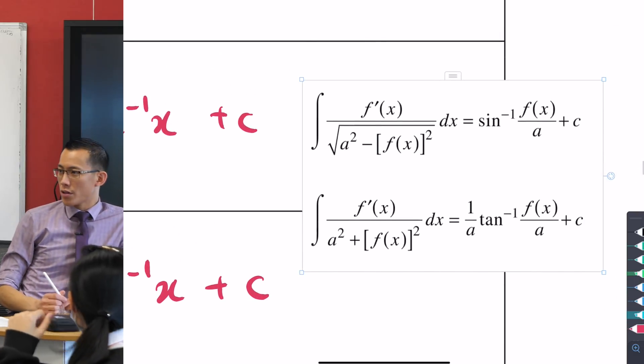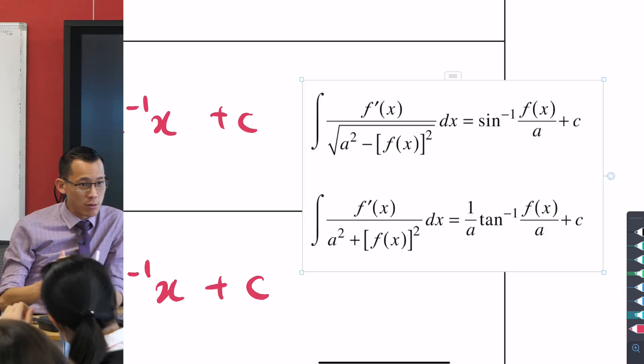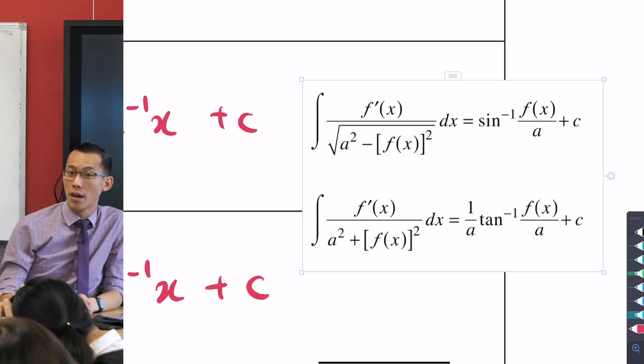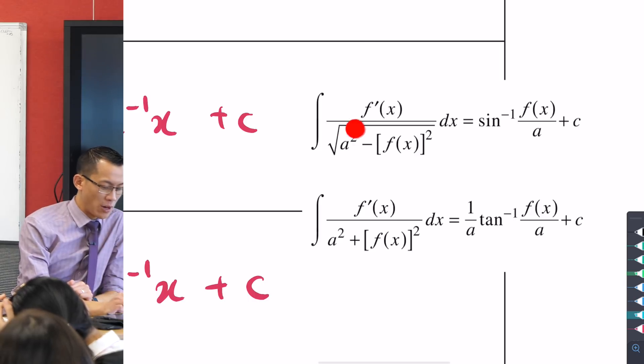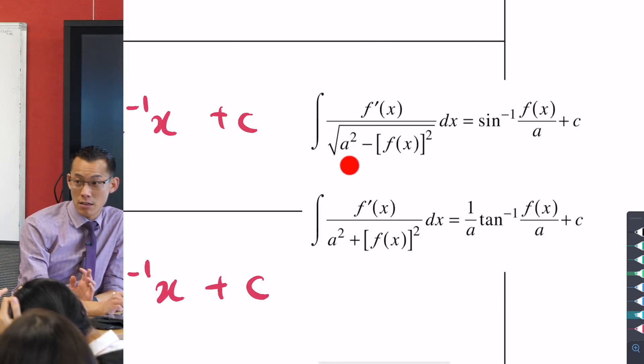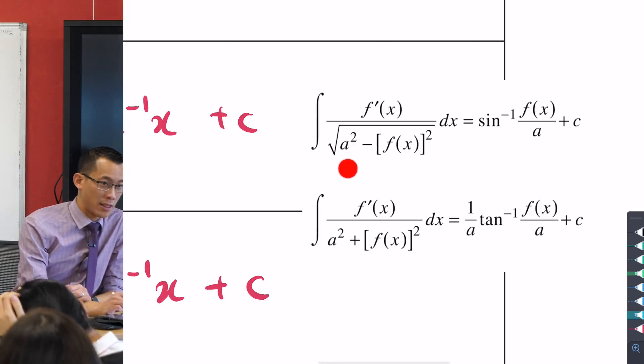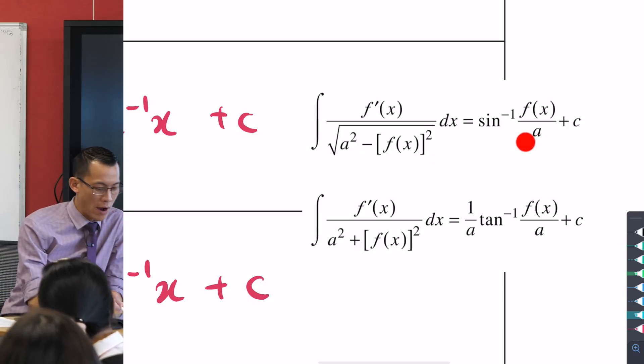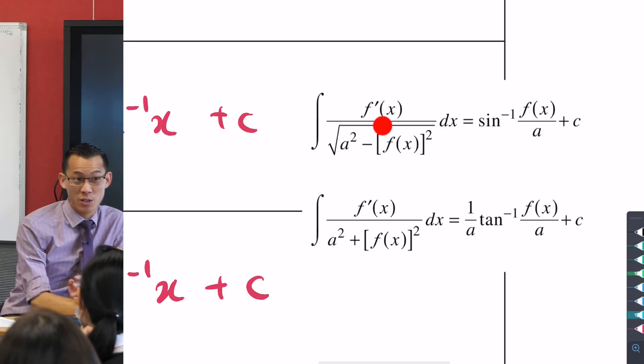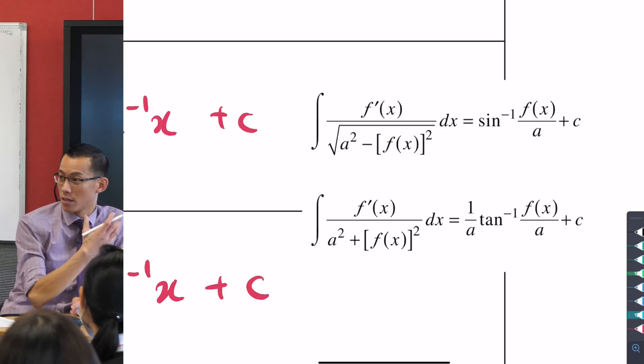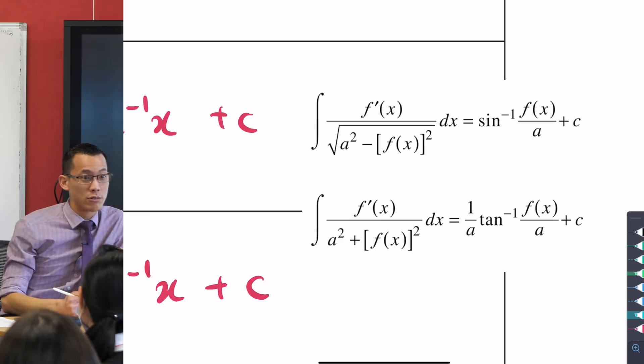Now what you will notice is that this is the souped up version, the generalised version of handling sine inverse and tan inverse. If you have a look here, you don't always get a 1 here, you could get any square number, or even if you get something like 3, you're going to end up with the square root of 3 over here.